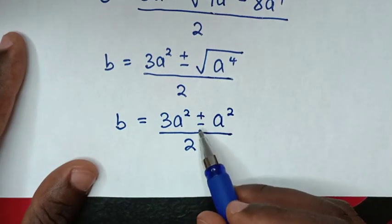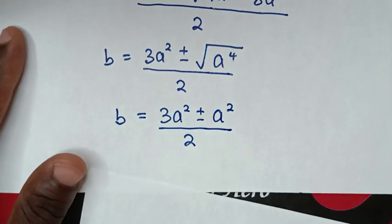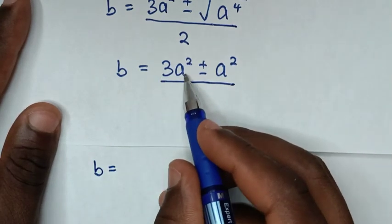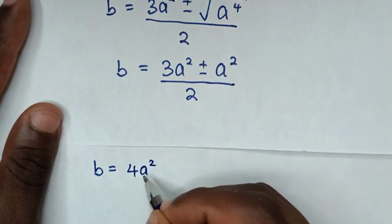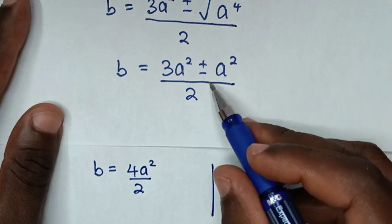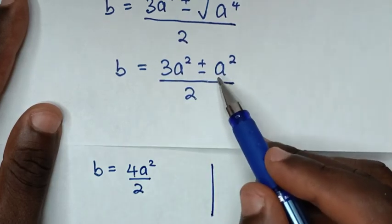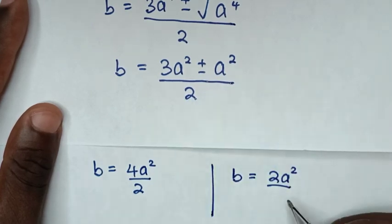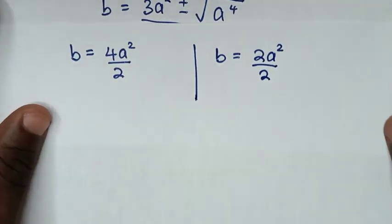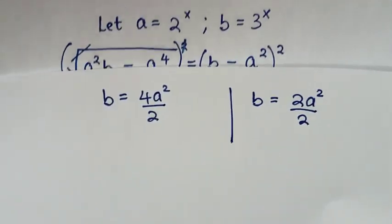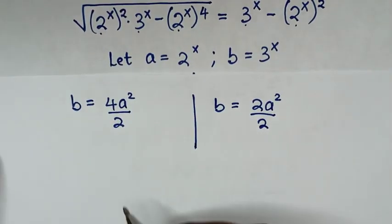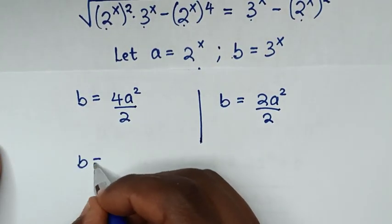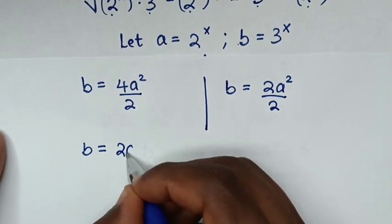From here, we have two solutions because of the plus or minus. For the first solution, when it is positive: b equals 3a² plus a², which is 4a², over 2. So b equals 2a².